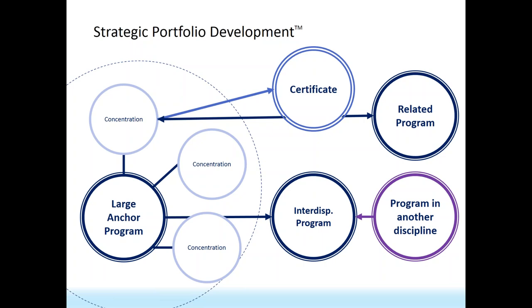We've observed three big trends in how students come into a degree. First, there's the traditional graduate student in a 10-to-12-class program looking for an MBA or similar degree. Second, there's an often-overlooked gateway audience — people wanting to try online education with a smaller package like a certificate or nano credential, many of whom convert into full graduate degrees. Third is an enrichment audience — people who already have a master's but want to pivot into new career areas. Offering content to all three audiences through modular strategic portfolio development lets you pivot to new markets and address new challenges.